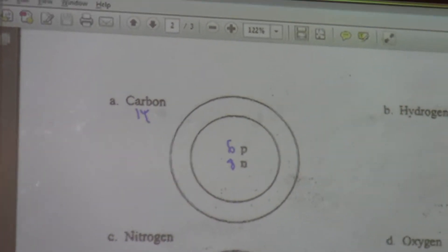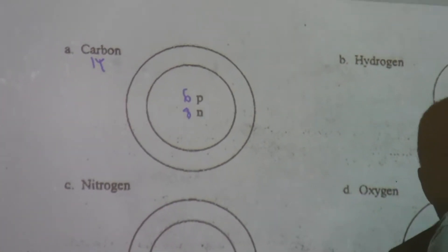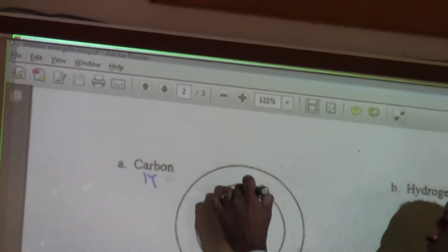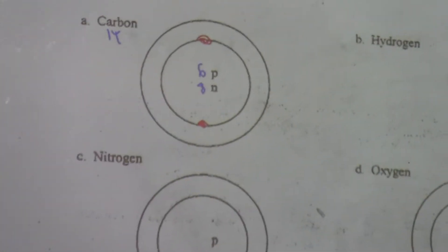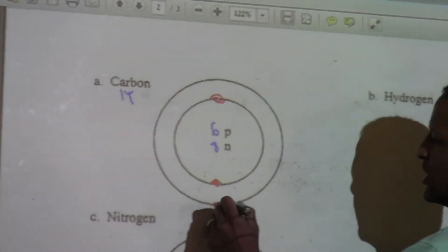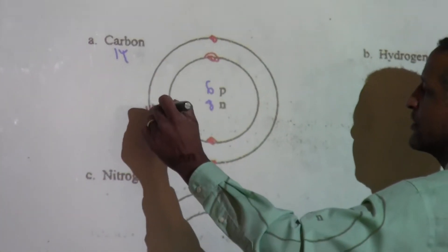Okay, how many electrons can go in the first ring? 2. So, boom, boom. Alright. How many are left? 4. 4. 1, 2, 3, 4.